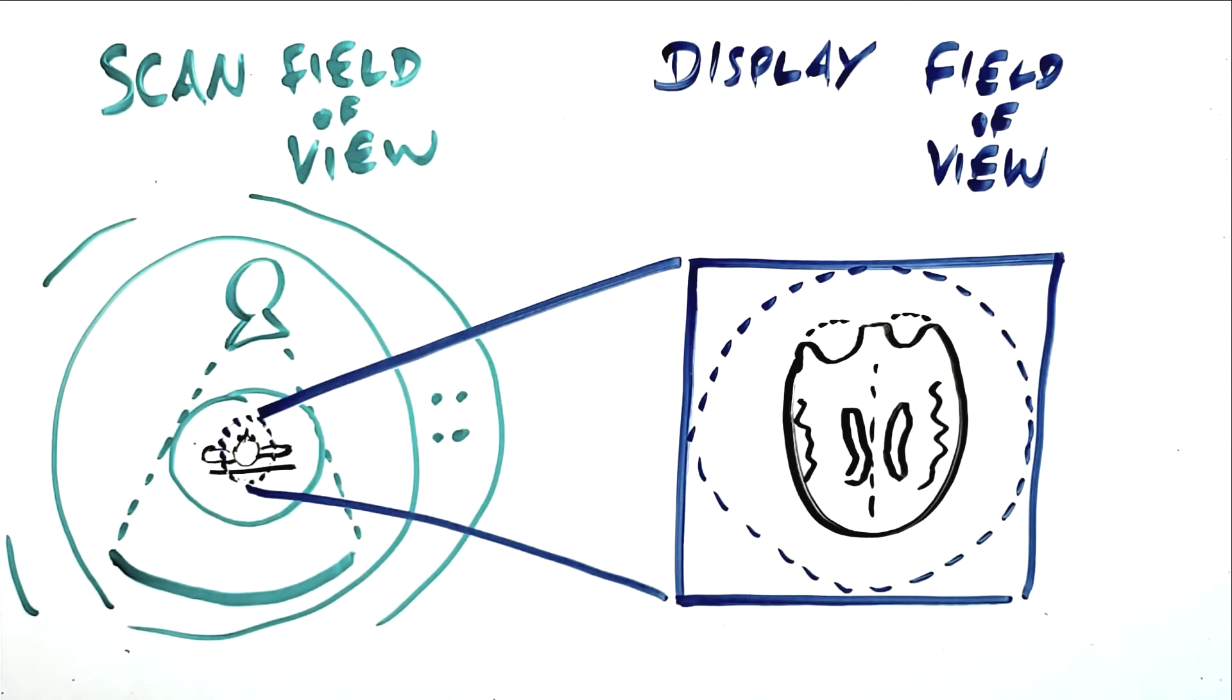In this case, decreasing the display field of view would serve to magnify the image, because we are displaying a smaller area of the body on the same size image matrix.